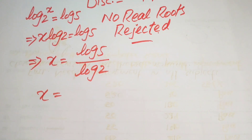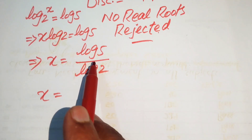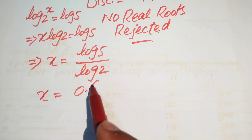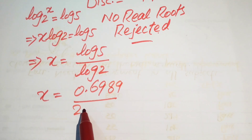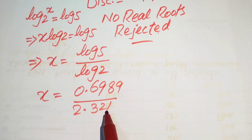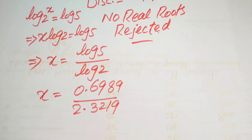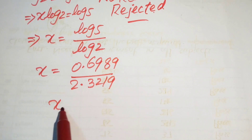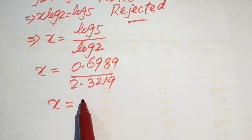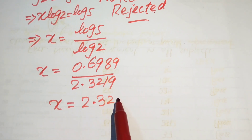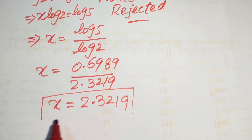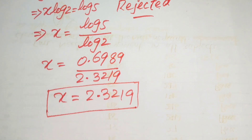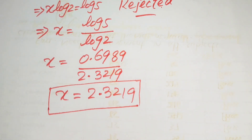Using a calculator, log 5 equals 0.6989 and log 2 equals 0.3010, so dividing gives x equals approximately 2.3219. This is clearly a real number and is the final answer. Thank you for watching — please subscribe for more videos.